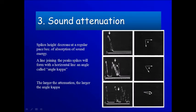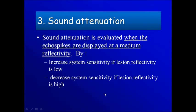So this represents marked attenuation, this less attenuation, and here small attenuation. Sound attenuation is evaluated when the echo spikes are displayed at medium reflectivity, either by increasing system sensitivity if the lesion reflectivity is low, or by decreasing system sensitivity if the lesion reflectivity is high.